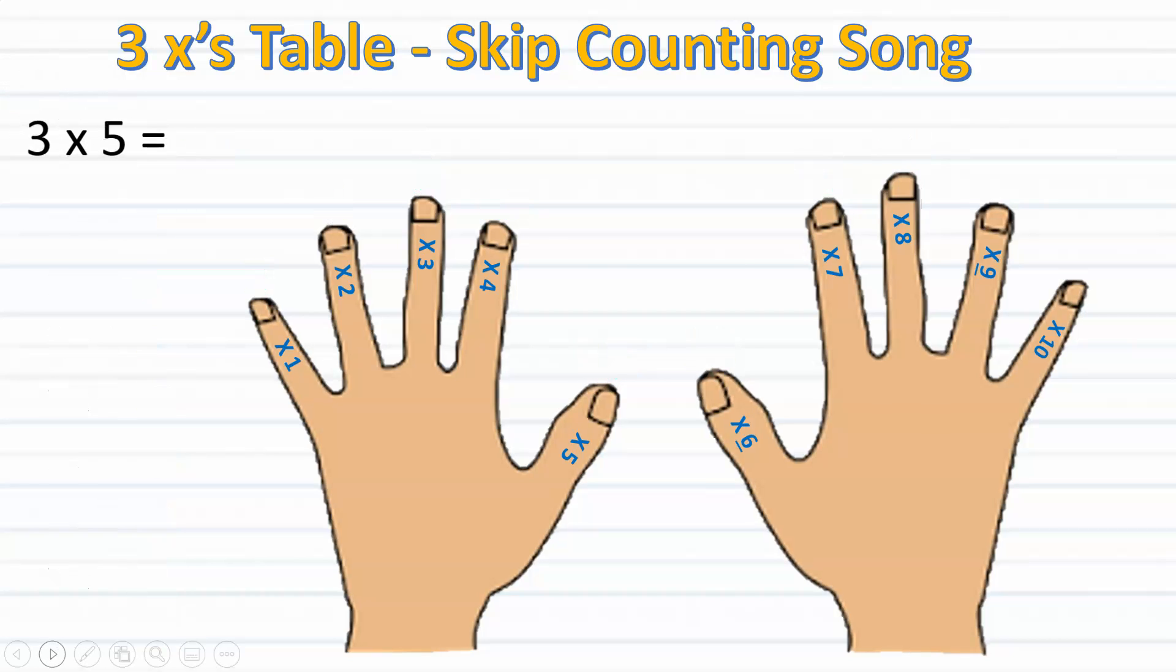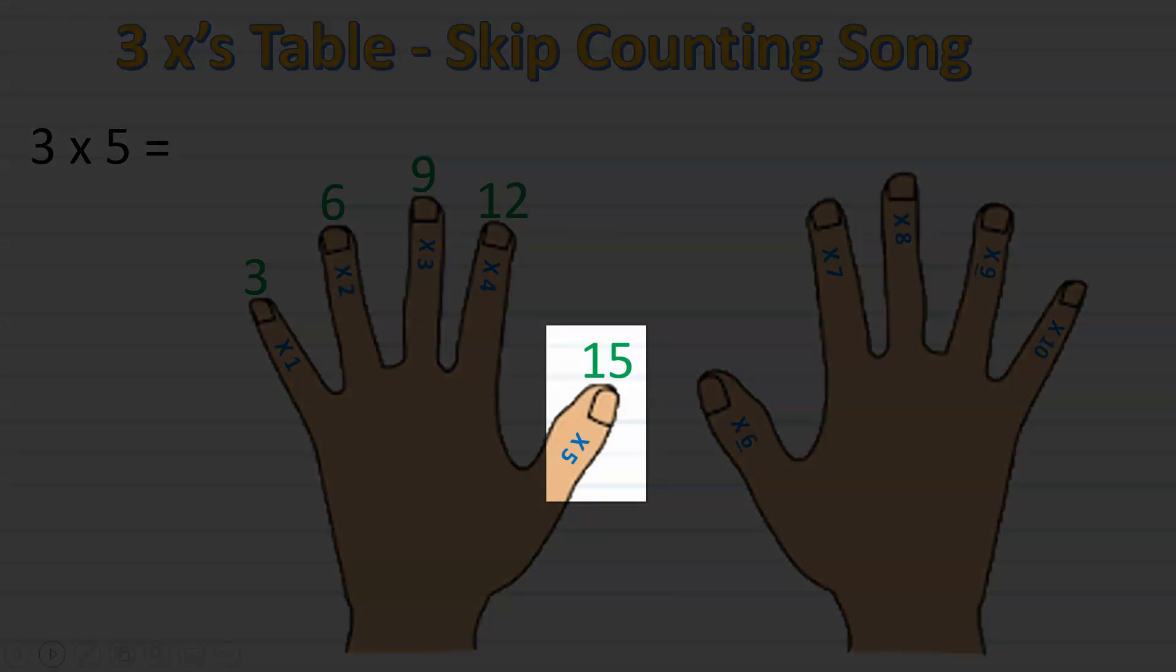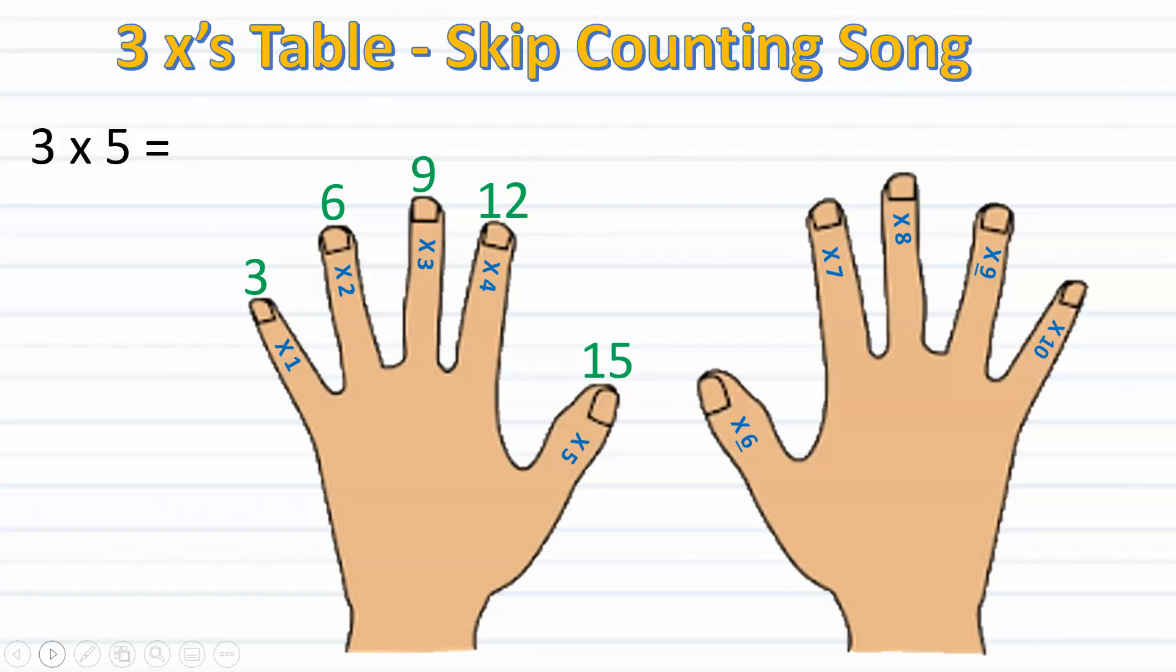Now we're ready to multiply three times five. Three, six, nine, twelve, fifteen, eighteen, twenty-one, twenty-four, twenty-seven. Did you stop at the correct number? Let's check it out. Three, six, nine, twelve, fifteen. You should have stopped at the fifth finger because we're skip counting by three five times. Therefore we know that three times five is fifteen.